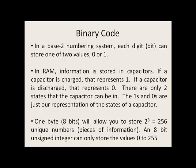So if we allocate 8 bits, or 1 byte, to store information, we can store 2⁸ or 256 unique numbers or unique pieces of information. An 8-bit unsigned integer, then, can only store the values 0 through 255.